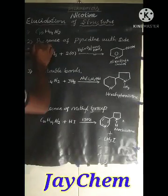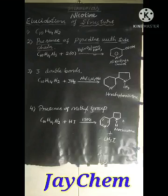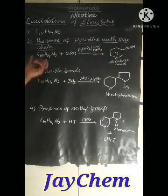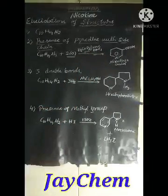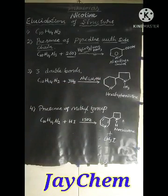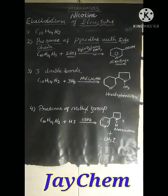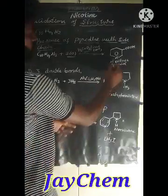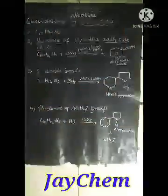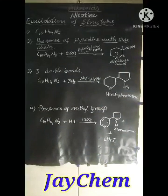Next, we have to show the presence of a pyridine ring with a side chain. Nicotine is oxidized with chromic acid or concentrated nitric acid, and it gives nicotinic acid. This reaction indicates that nicotine contains a pyridine ring along with a side chain at the third position.